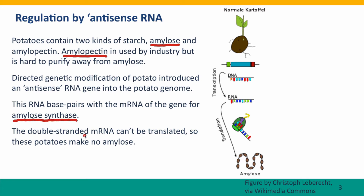The way they did this was by blocking the messenger RNA. Here's a diagram of the production of starch in a potato. Here's one strand of the DNA, and here's the messenger RNA that's made from this strand. You can see that the messenger RNA is complementary to each position. When that messenger RNA is transcribed, it produces an enzyme, which produces the starch amylose.